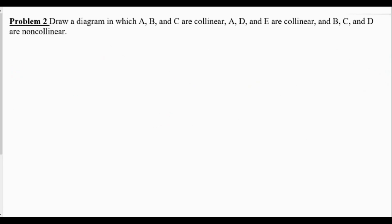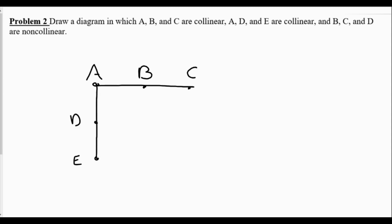Problem two: draw a diagram in which points A, B, and C are collinear; points A, D, and E are collinear; and points B, C, and D are non-collinear. The only point shared between the two collinear sets is point A. Starting with point A, I create a line that has B and C on it — so A, B, and C are collinear. Then placing D and E, A, D, and E are also collinear. Points B, C, and D are not collinear because they are not on the same line.